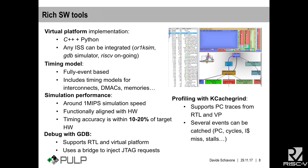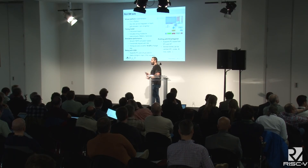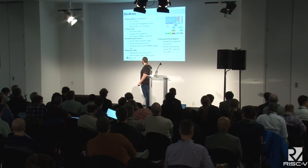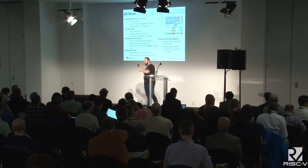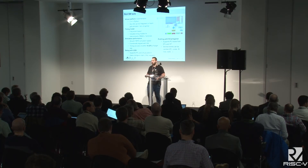PULP is not only hardware. We have a lot of software running around PULP: a virtual platform built in C++ and Python for configuration, and an instruction set simulator. This virtual platform tries to be as close as possible to hardware in terms of time accuracy, but runs much faster. All our PULP platforms provide debug support, including a bridge to translate GDB commands into JTAG requests, and profiling tools to see where your application is losing or gaining time.